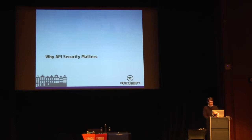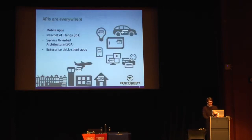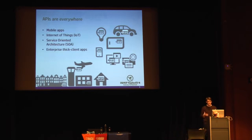Why is API security important? In short, APIs are everywhere. Gartner reports there will be an estimated 4.9 billion connected things in 2015. We have this internet of things, millions of mobile applications in various app stores, and most of these things are talking to back-end systems using APIs. We also have service-oriented architecture and thick client enterprise applications that have been using APIs for communication for a long time.